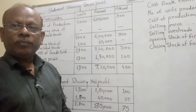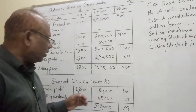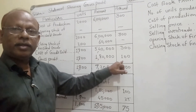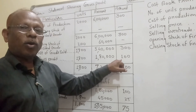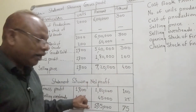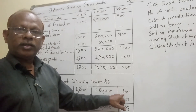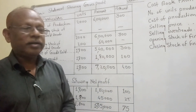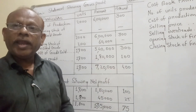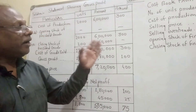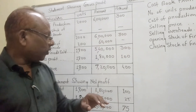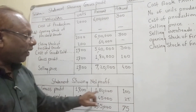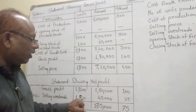I have written here 'Statement Showing Net Profit.' The gross profit already found will be written here. We are selling 1800 units, so the selling overheads of 25 rupees per unit are multiplied by 1800 units, giving 45,000 rupees.